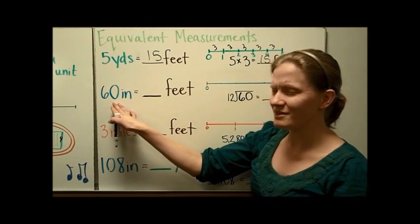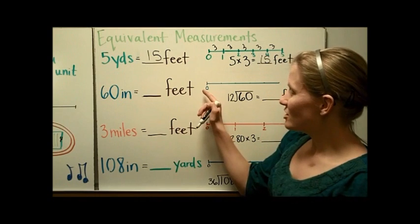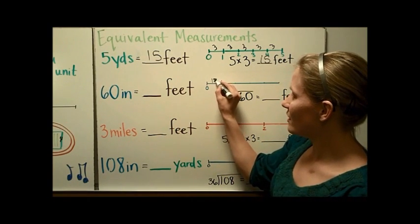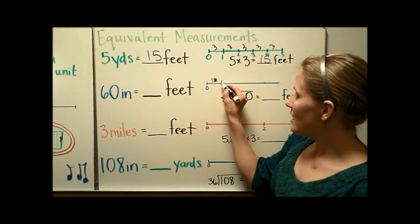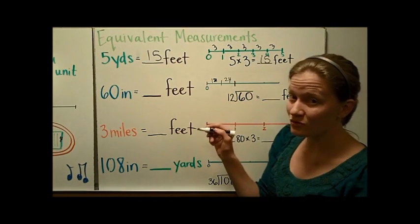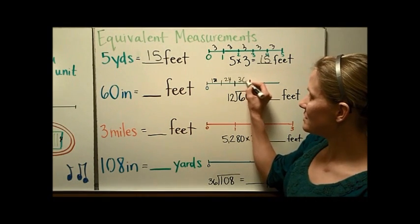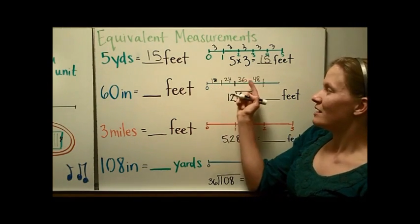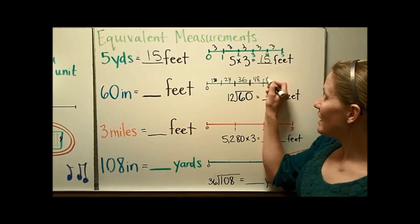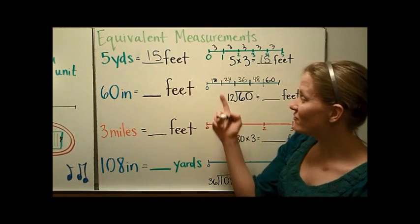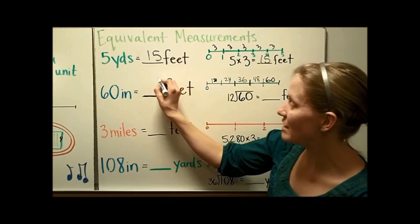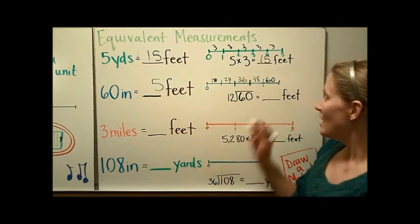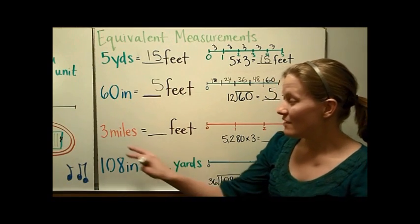Next, if I need to figure out how many feet are in 60 inches, I think about how inches and feet are related — there are 12 inches in a foot. So: 12 inches is 1 foot, 24 inches is 2 feet, 36 inches is 3 feet, 48 inches is 4 feet, and 12 more makes 60 inches — which is 5 feet. So I count 1, 2, 3, 4, 5 feet. The operation I was really doing is taking 60 inches and dividing by 12 inches per foot to get 5 feet.